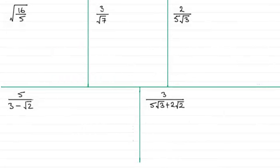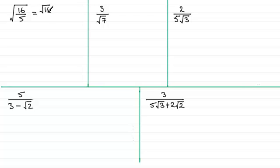Welcome to this video on rationalising. You may recall that in the previous video in this series I showed you that if we had to square root a fraction it was exactly the same as square rooting the top and the bottom of the fraction. So here we've got square root of 16 over the square root of 5. This gave us 4 for the square root of 16, but the square root of 5 we can't break down any further, so it's just 4 over root 5 — that's the exact value.